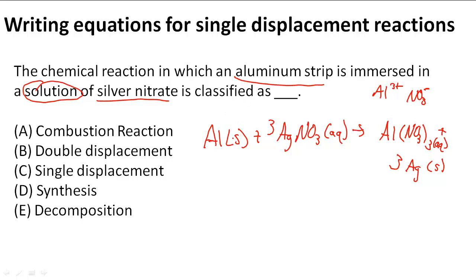What we can see is that aluminum replaces the Ag and the Ag is kicked out. So only one of the anion or cation was removed, and so it is definitely a single displacement reaction.